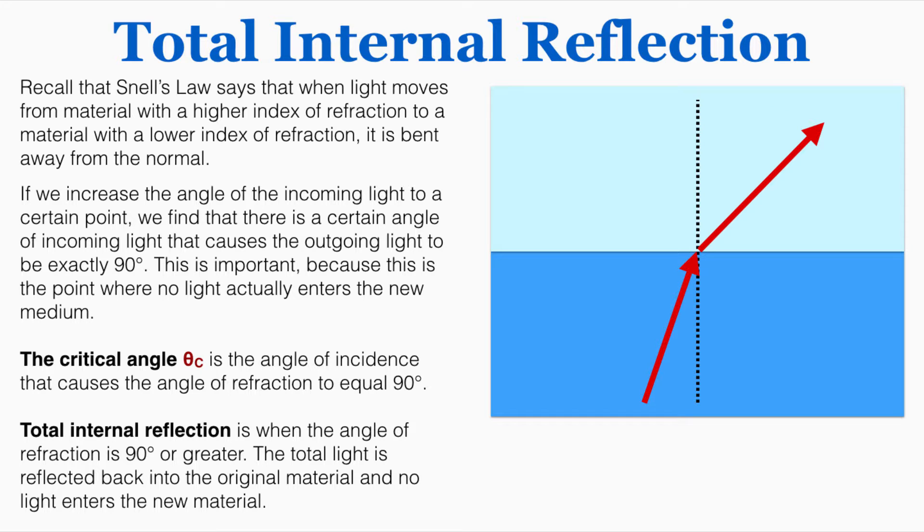If we increase the angle of the incoming light to a certain point, we find that there is a certain angle of incoming light that causes the outgoing light to be exactly 90 degrees. This is important because this is the point where no light actually enters the new medium. No light here is actually going into air in this case; it's just staying along the surface of the water.